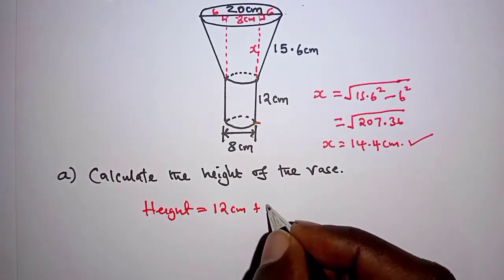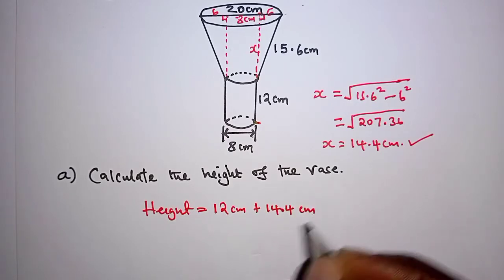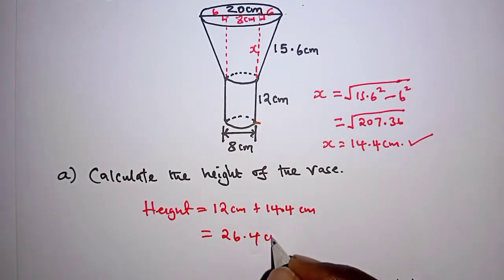which is 12 centimeters plus the height of the frustum, which is 14.4 centimeters. And this in total is 26.4 centimeters.